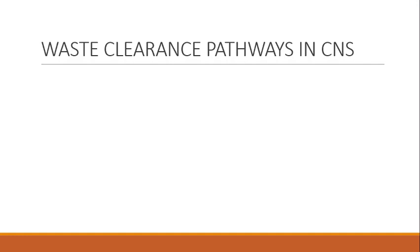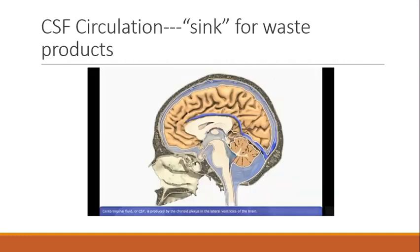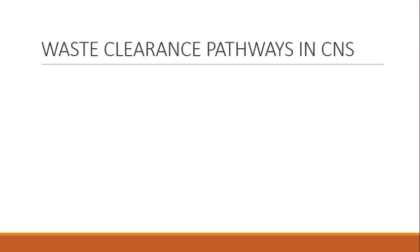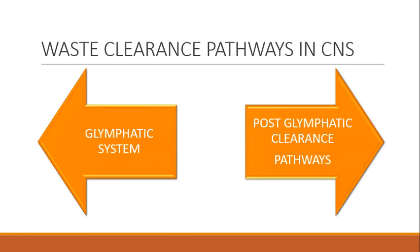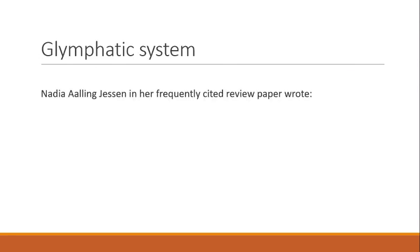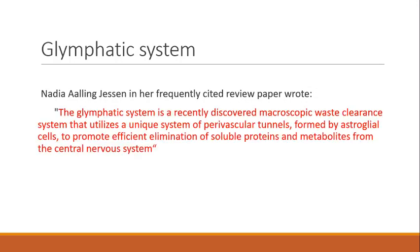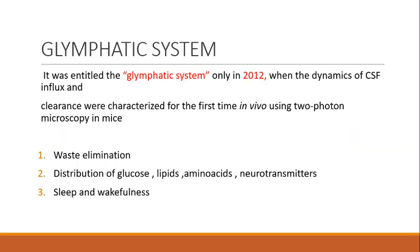However, it was difficult to explain how waste from the interstitium — at a greater distance from the subarachnoid space — could diffuse into the CSF running in the subarachnoid space. Therefore, a proper clearance system was described: the glymphatic system. Nedergaard and colleagues, in a frequently cited review paper, described it as a recently discovered macroscopic waste clearance system which utilizes a unique system of perivascular tunnels, formed by astroglia cells, to promote the efficient elimination of soluble proteins and metabolites from the CNS. It was named the glymphatic system in 2012, when the dynamics of CSF influx and clearance were characterized for the first time in vivo using two-photon microscopy in mice.